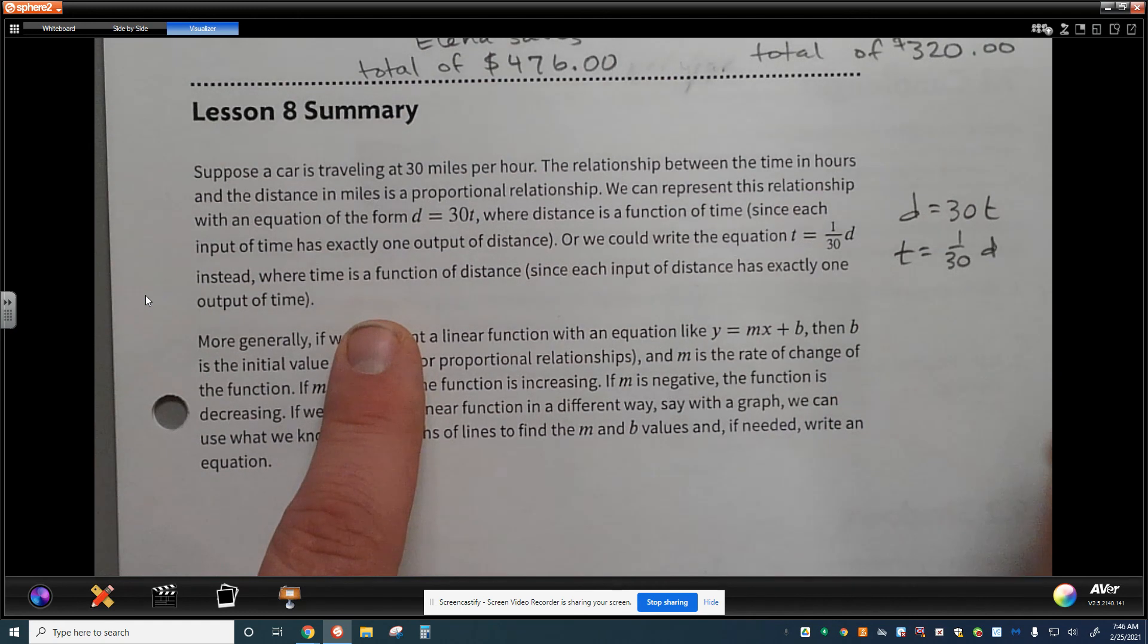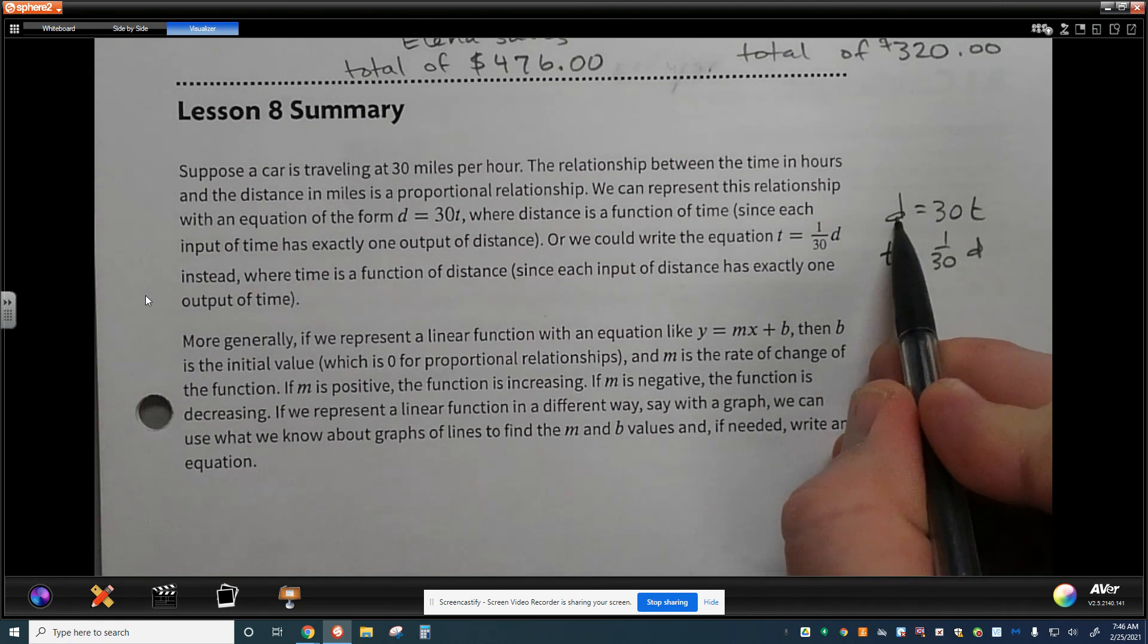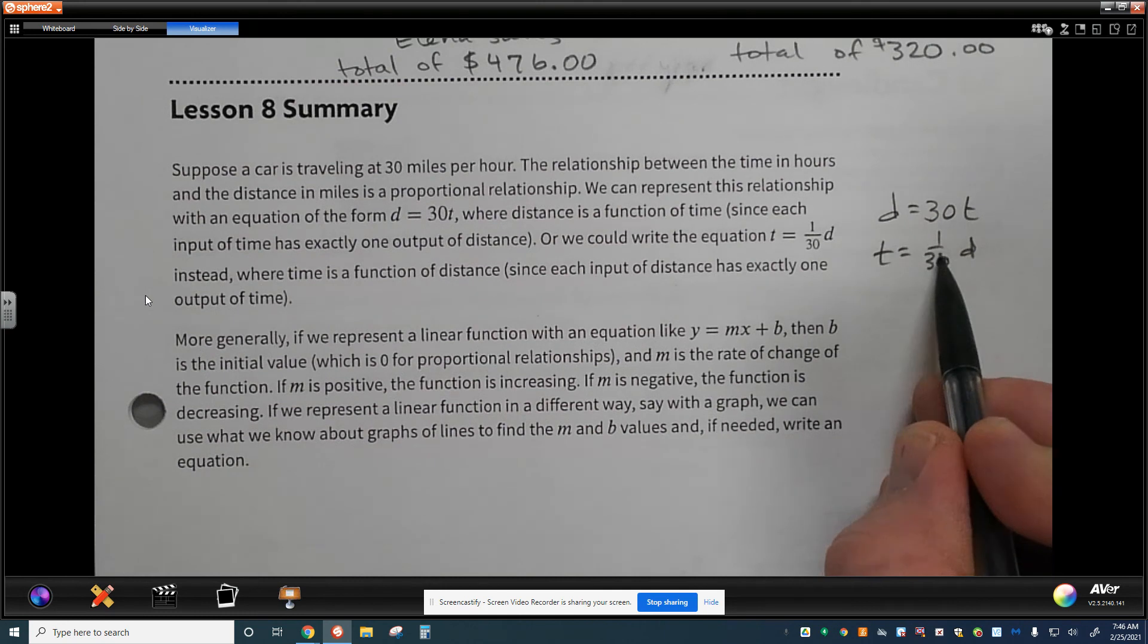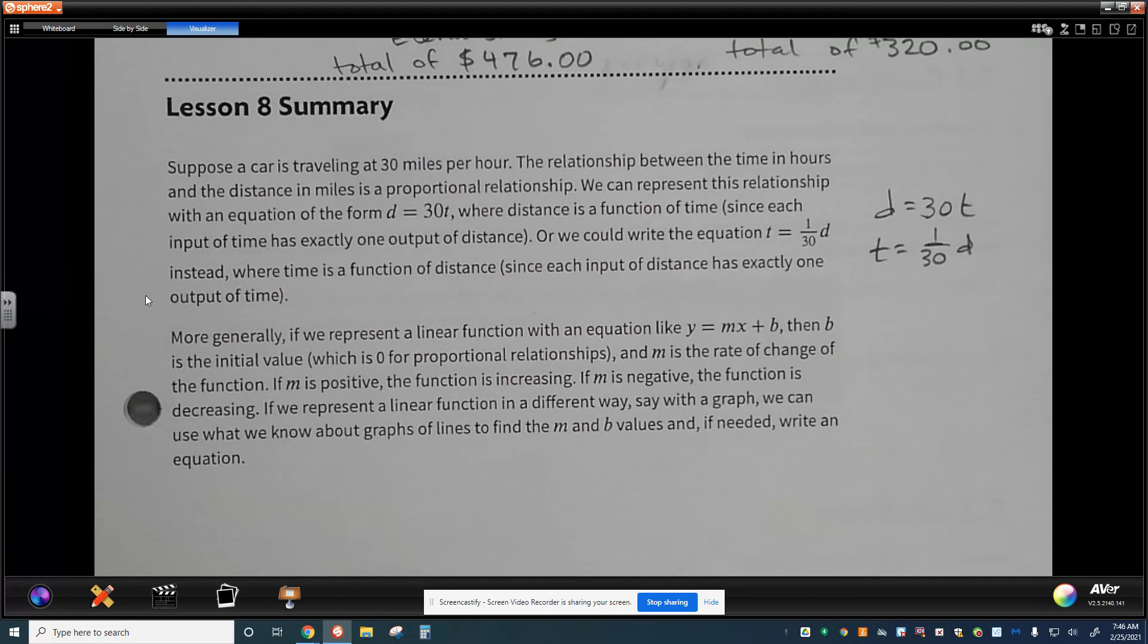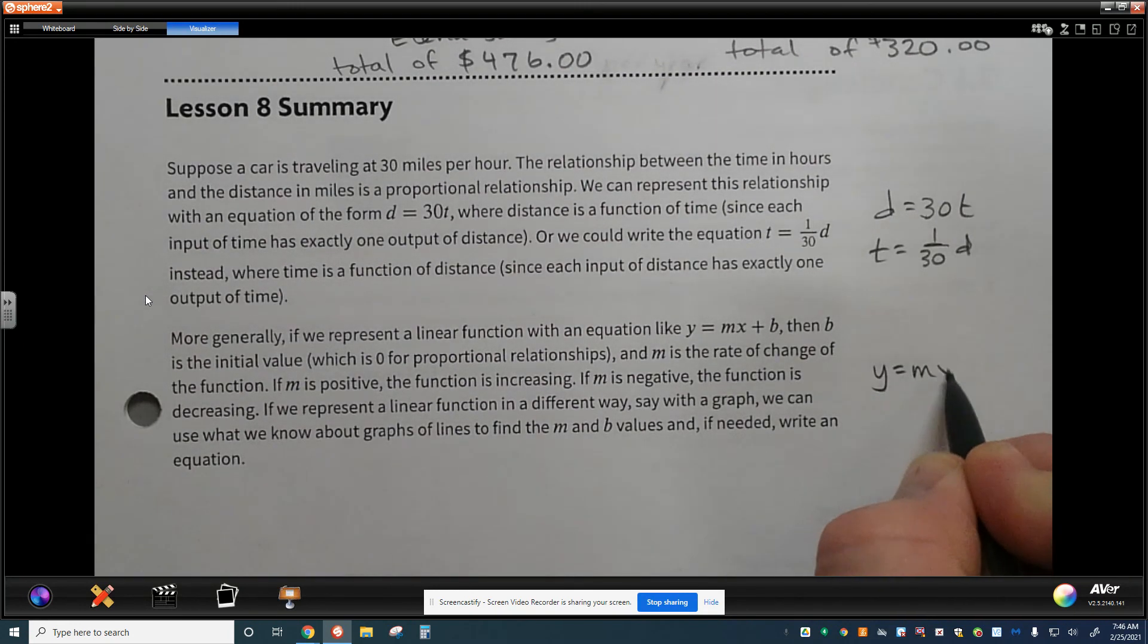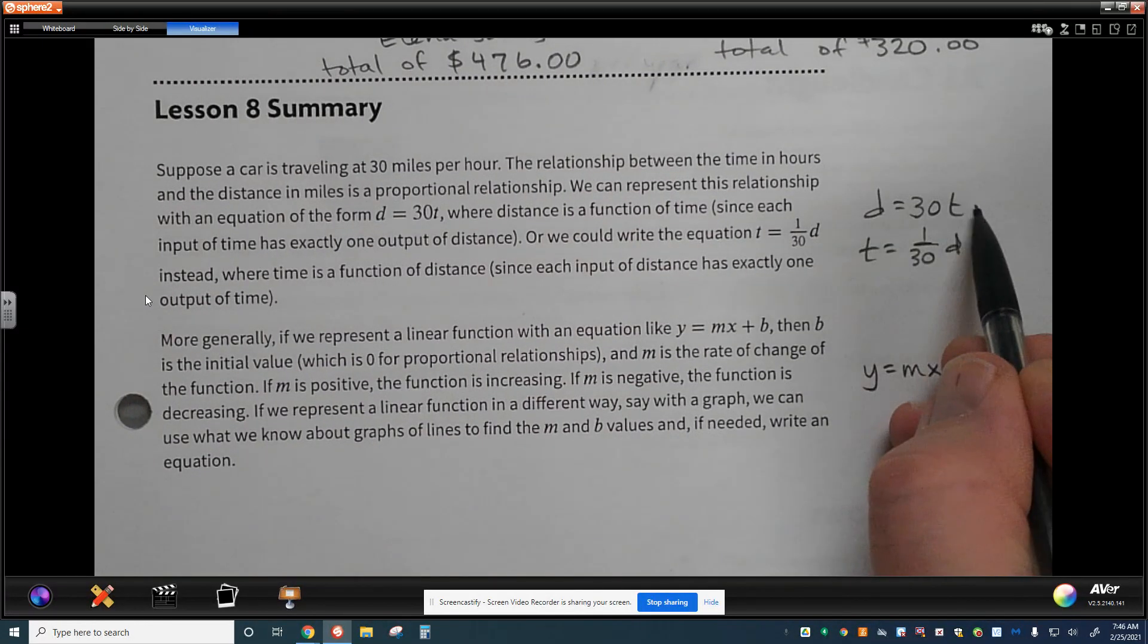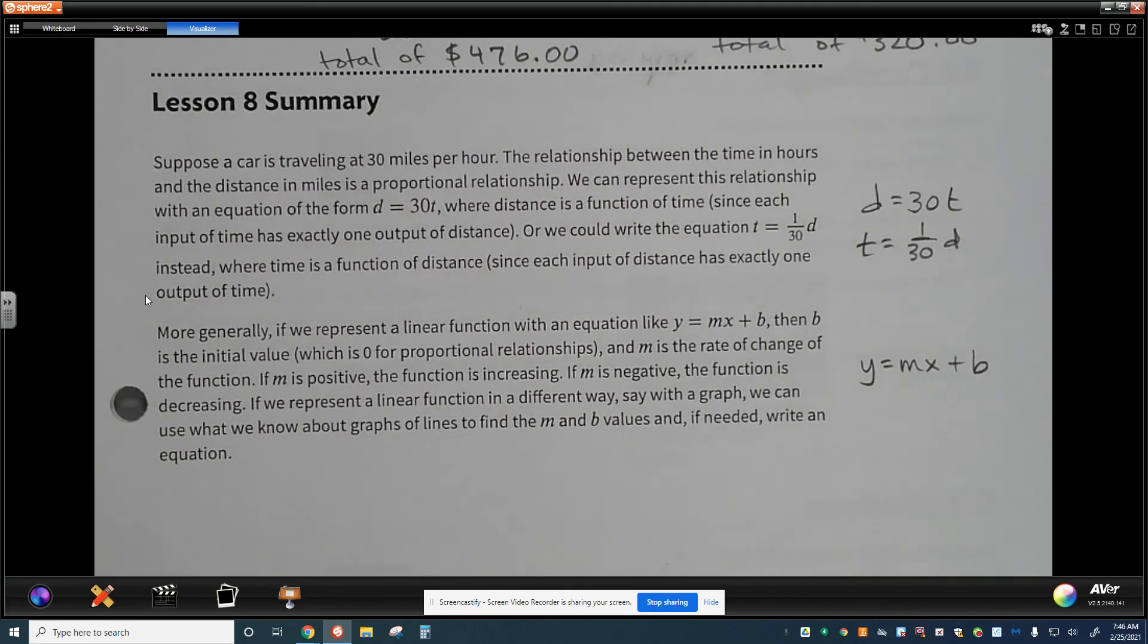What these are are just reciprocals of each other where we recognize when distance is dependent on time we're actually going at a faster rate but when you want to reverse that we can take time is equal to the reciprocal of the constant rate times the distance so it's just simply undoing what was done. So more generally if we represent a linear function with the equation like y equals mx plus b, so in slope intercept form, then b is the initial value it's where we start at which is 0 for the proportional relationship. m is the rate of change in the function if m is positive the function is increasing if m is negative the function is decreasing pretty simply put and if we represent the linear function in a different way like with a graph we can still use that same visual to represent and understand what those values of the slope and the y intercept are and if we need to we can write an equation for the efficiency of finding what we need. That's it for today thanks for tuning in have a great day.